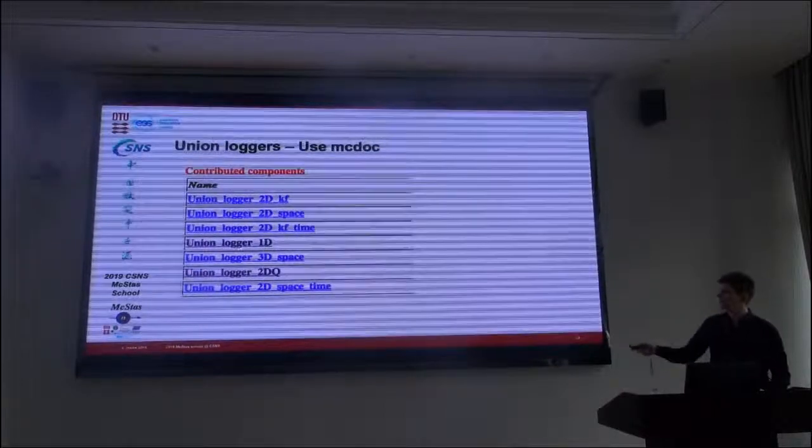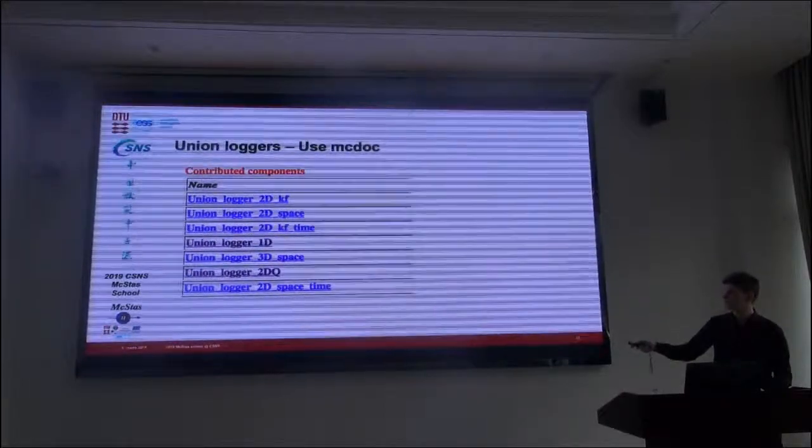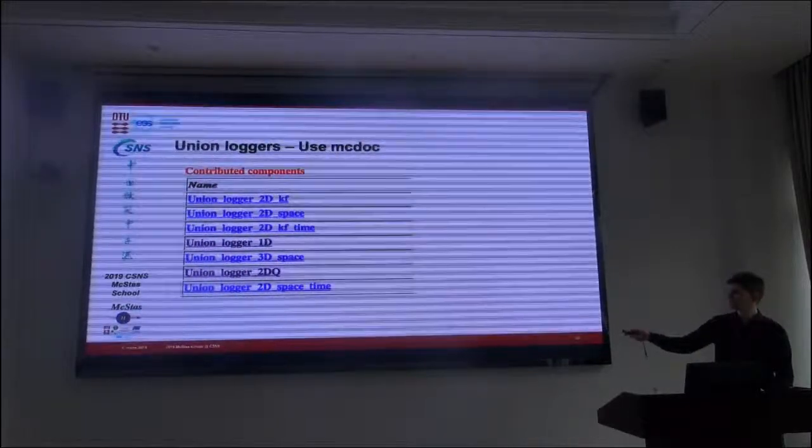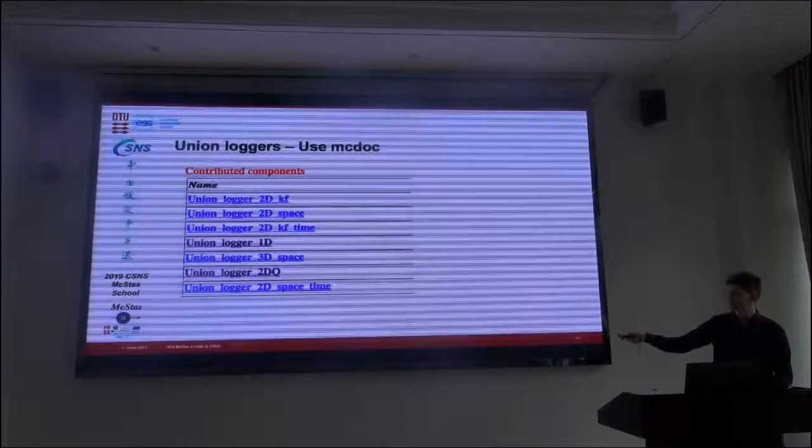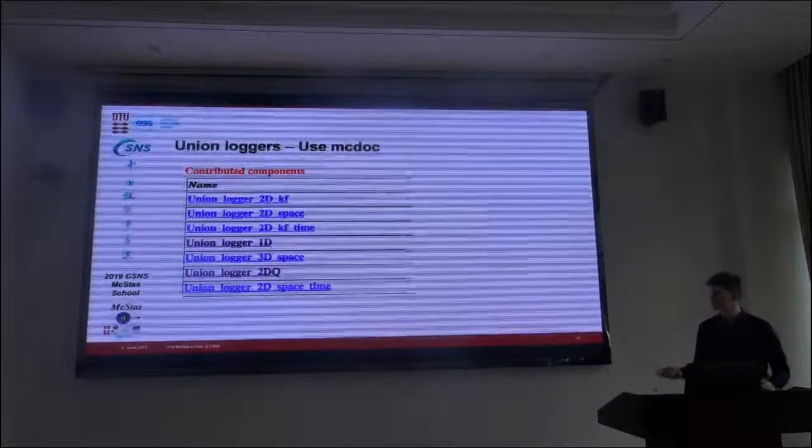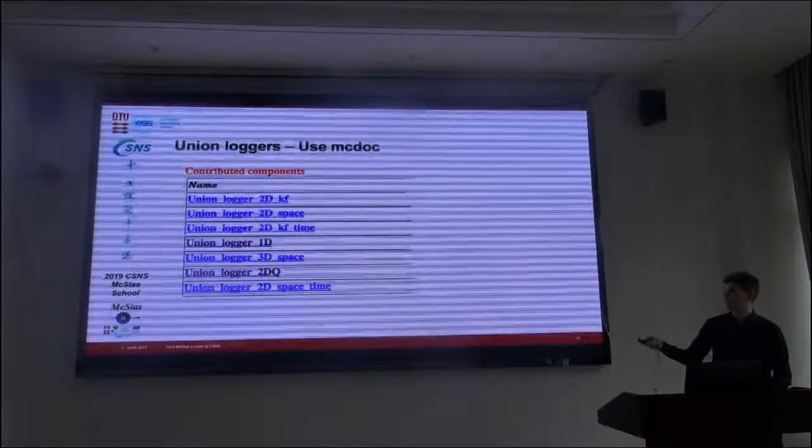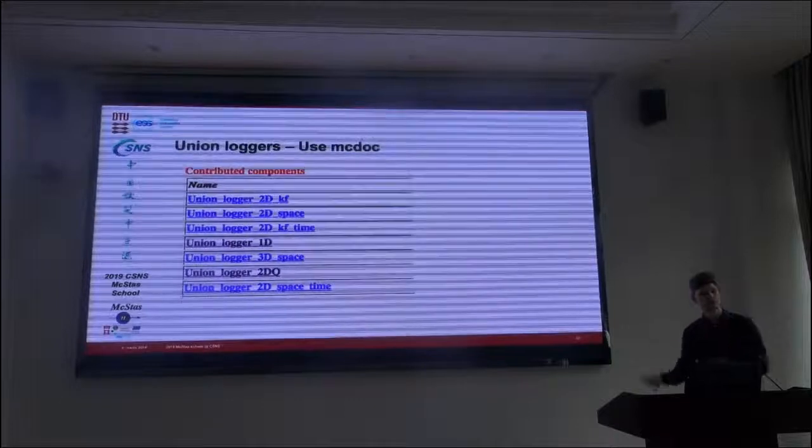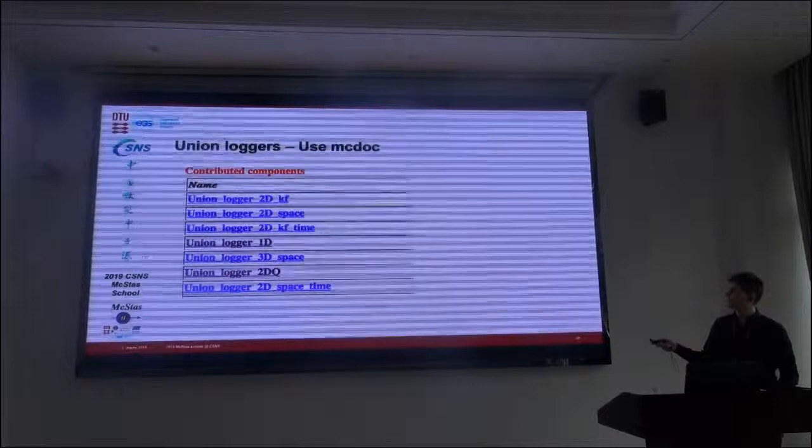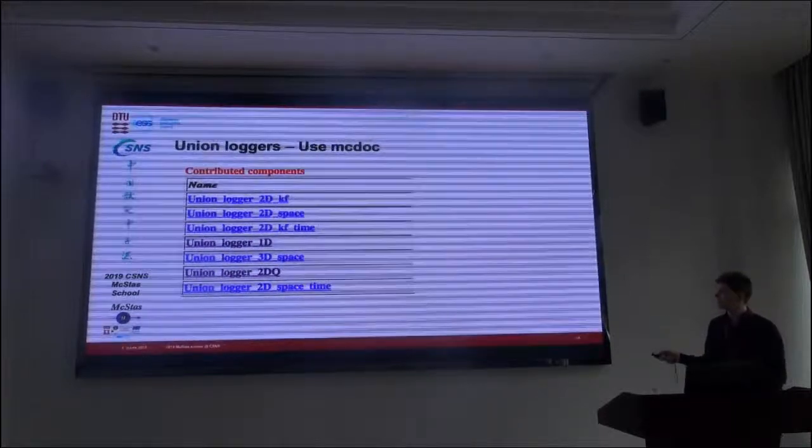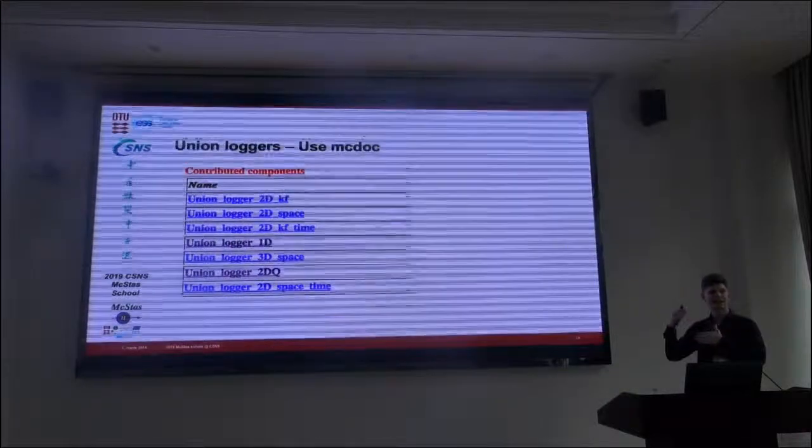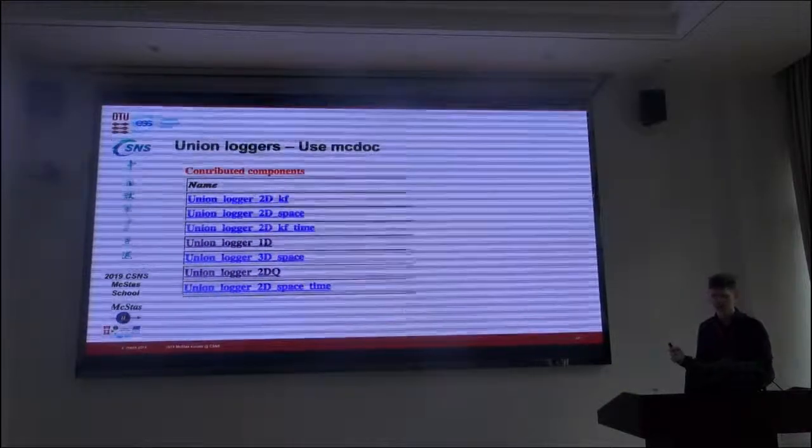Again, these are called union loggers. And there is a few of them. The one I used for the 2D was 2D space. And then if I want to do a movie, it's called 2D space time. Then it will do a number of time steps as you specify. But you can also have a 1D logger that logs as a function of time or some other variable. And you can also have a 3D space logger. It's not a 3D image. It's shown in slices like a time slice would be.